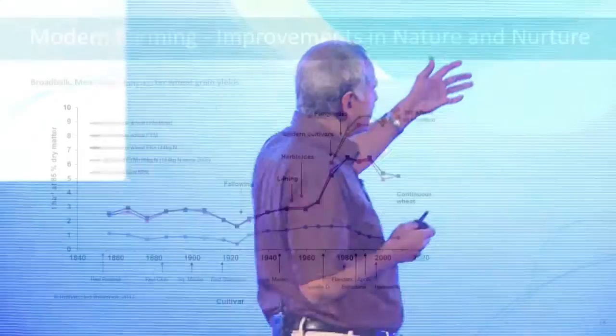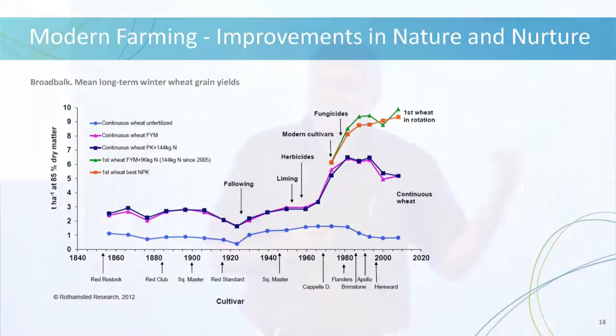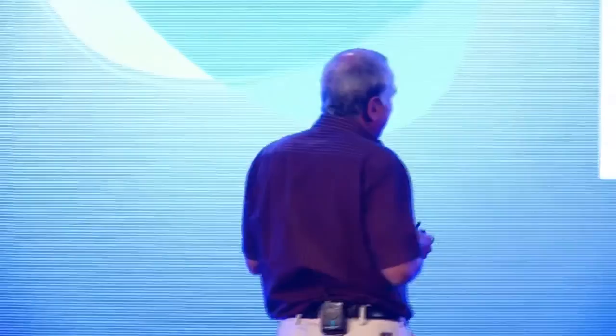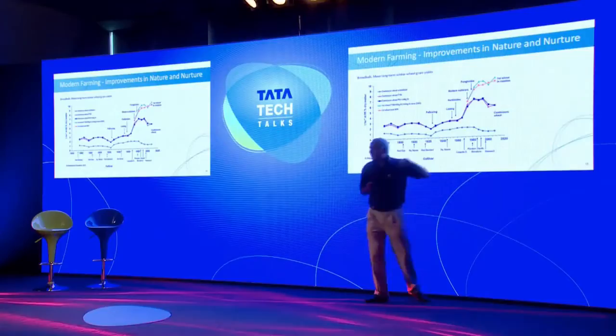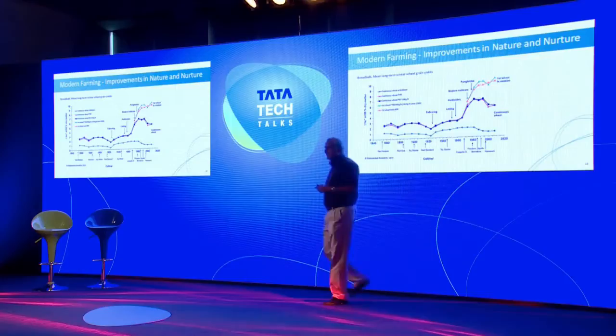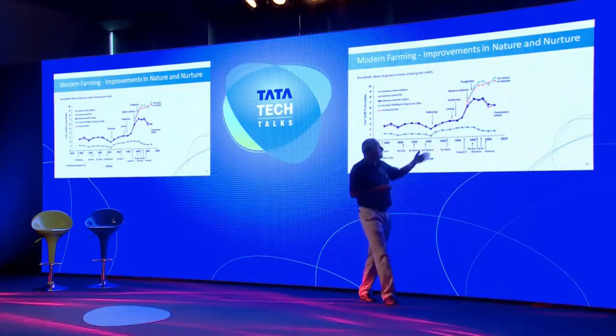One of the longest running experiments in agriculture in the world is at the Rothamsted Agricultural Experimental Station in the UK. This is a fertilizer and variety experiment with wheat that started before Mendel published his paper and is still running today. It speaks to how both nurture and nature have helped improve the productivity and production of crops. Without fertilizer application, yield levels of wheat, in spite of genetic improvements, would have remained low. With judicious fertilizer applications, yield levels have reached up to 10 tons per hectare from one ton per hectare.